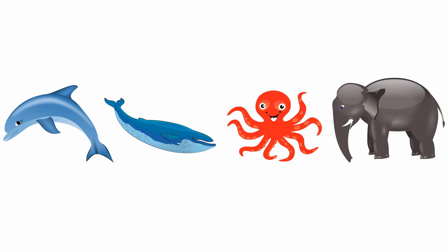The next one, dolphin, blue whale, octopus and elephant. Among these four pictures, dolphin, blue whale and octopus live in water. But elephant is a wild animal. So, we are going to put a cross for elephant.